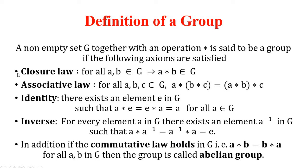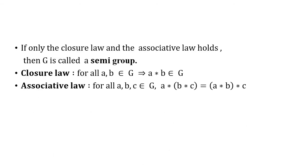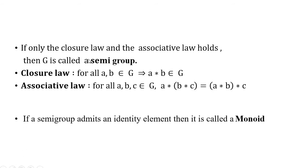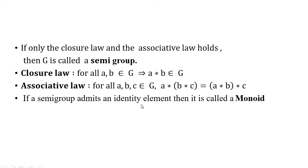If a set with respect to a binary operation satisfies only the closure law and the associative law, it is called a semigroup. If additionally the identity element exists — that is, along with closure and associativity — then we call that set a monoid.